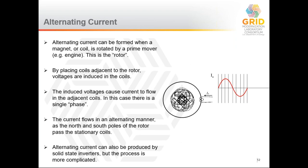Alternating current is typically produced by taking a magnet or an energized coil connected to a prime mover — whether a steam turbine, gas engine, or hydroelectric turbine — and rotating it. This becomes the rotor. Coils placed next to it will have induced voltage in a sinusoidal form, producing a simple alternating voltage waveform. This is how we have historically produced the alternating current used in all of these systems.